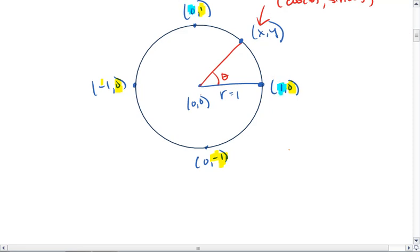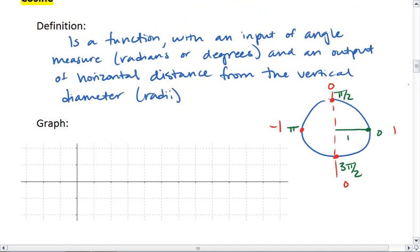We get 1, 0, negative 1, 0, which is exactly what we got, 1, 0, negative 1, 0.